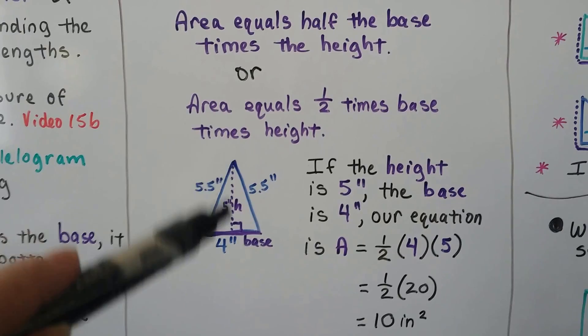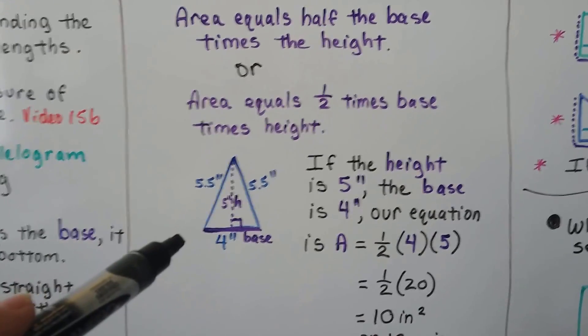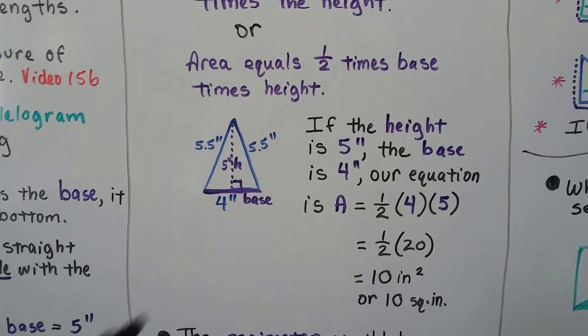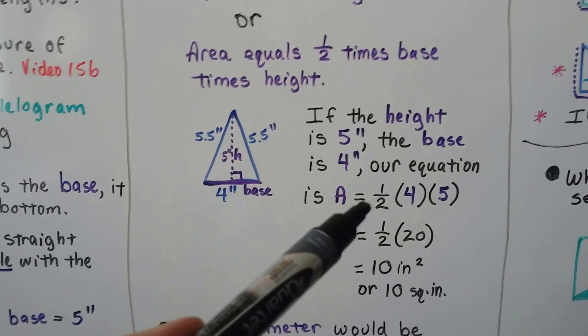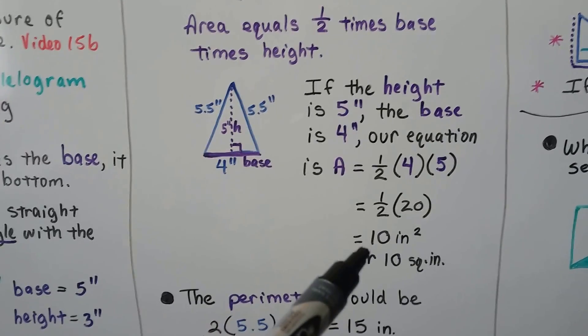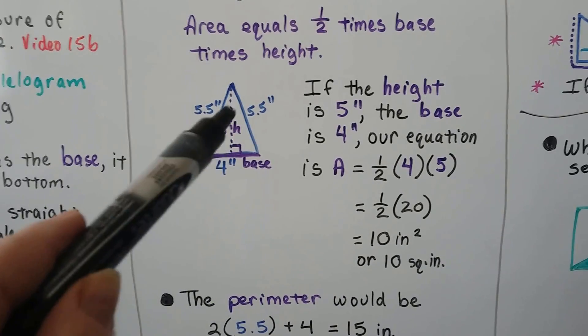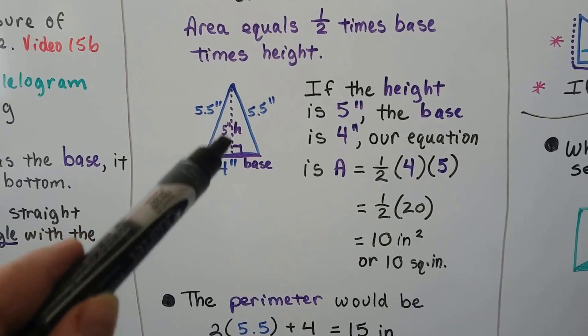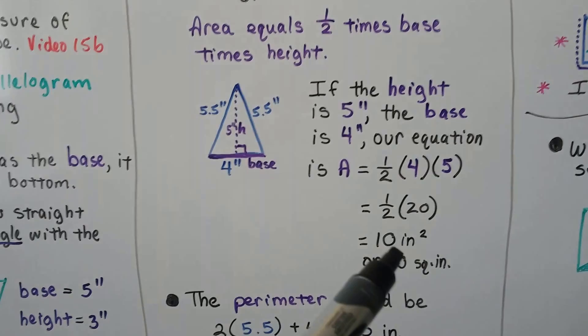Here we have a height of 5 inches and a base of 4 inches. We do area equals half times 4 times 5. 4 times 5 is 20, so half times 20 is 10. So the area inside this triangle would be 10 inches squared or 10 square inches. Either way is correct.